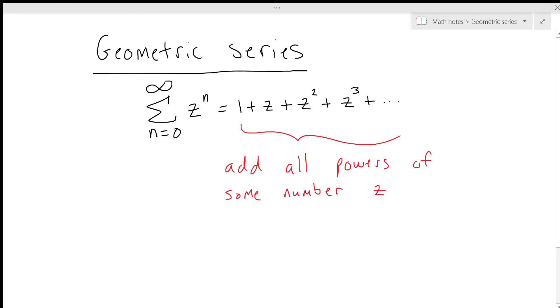And today what we're going to do is prove this formula. So we're going to prove that this series, sum over all n of z to the n, is equal to 1 divided by 1 minus z if the absolute value of z is less than 1.